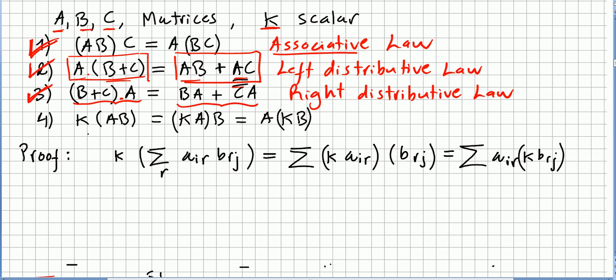The proof is really easy because k times AB would be k times the sum of a_ir b_rj. But k can come here, so that's the same as sum of k a_ir b_rj. And it is also the same because k, this is scalar multiplication, so k can come here now. That's the same as sum of a_ir k b_rj. So this one is this one. The fourth property is also proved.